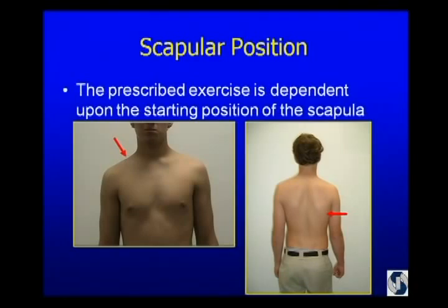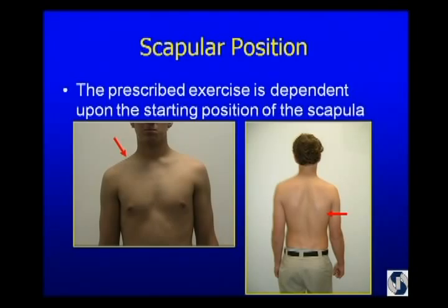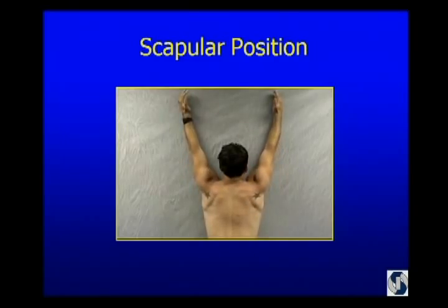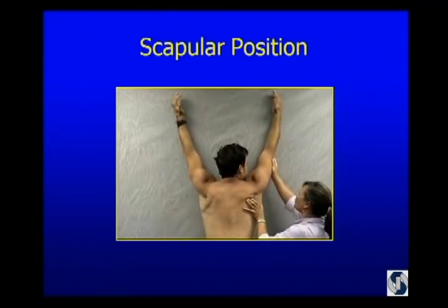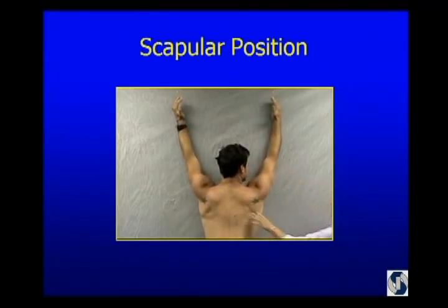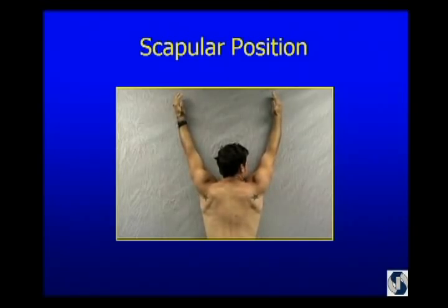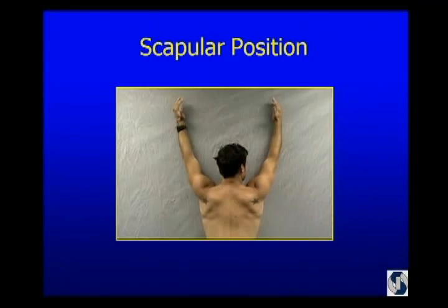Let's go back to this young man. You can't just say a scapular stabilization program or just position the scapula, because most programs about scapulothoracic rehabilitation teach the patient how to retract and depress the scapula. But what happens if he retracts and depresses? He further elongates his upper trapezius and winds up with more dysfunction, because his problem is that his upper trap is weak, which is why his shoulder is drooping. So we give him a program almost like a VMO set — a very small movement. When you have a patient with a drooped shoulder, you've got to get them to learn how to use their upper trap.